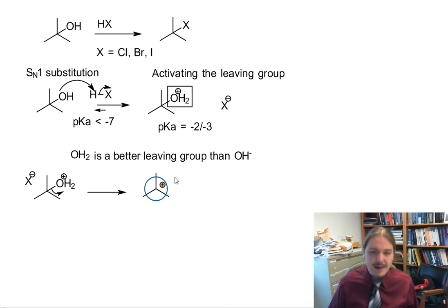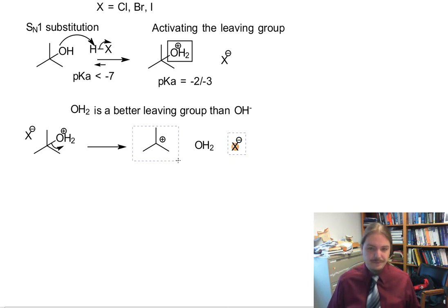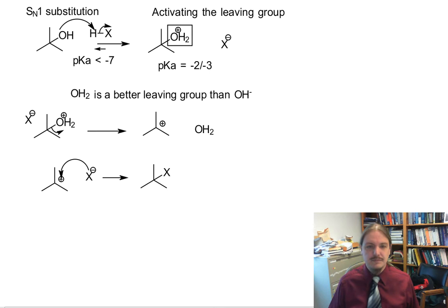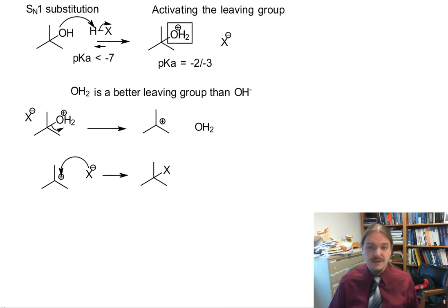And then here's my water as a leaving group, and my halide anion. As I said, it's still here, and that's important because what happens next is that our halide anion and our carbocation get together. And good things come of it. Well, a new carbon-halogen bond comes of it anyway. There we go. SN1 type mechanism.